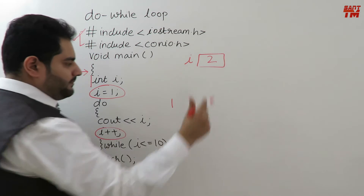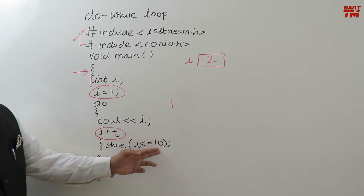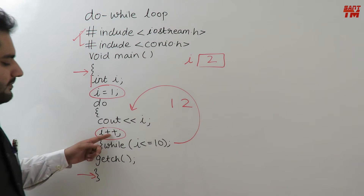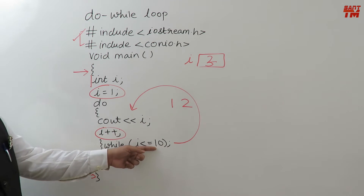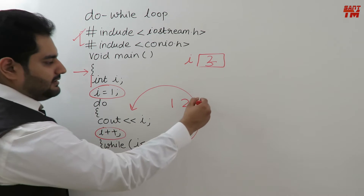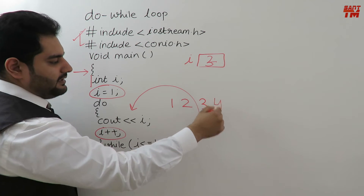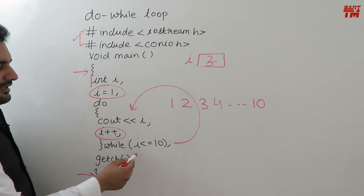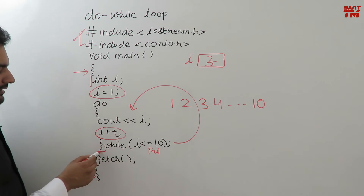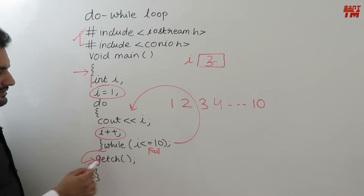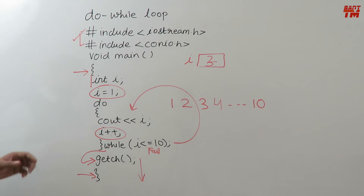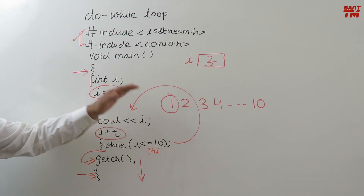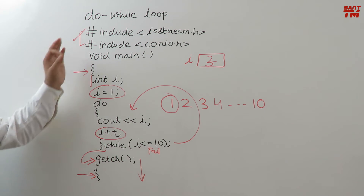When i is 2, the condition is checked: 2 less than or equal to 10 — yes, the condition is true, so the loop body executes again and 2 is printed. i++ makes i equal to 3, 3 less than or equal to 10 — again true, so 3 is printed. This continues until 10 is reached and printed. When i++ makes i equal to 11, the condition 11 less than or equal to 10 fails, and we exit the do-while loop. The key difference: in do-while, 1 was printed without checking the test condition, but in for and while, 1 was printed only after checking the condition.